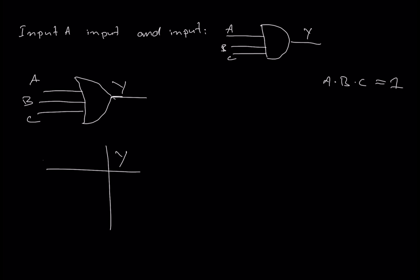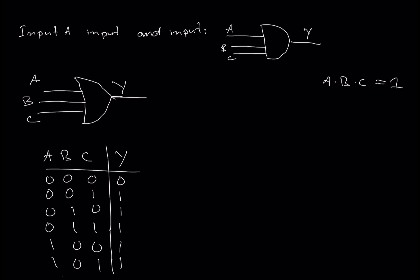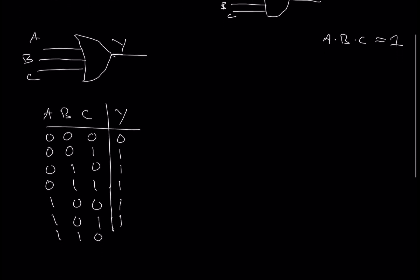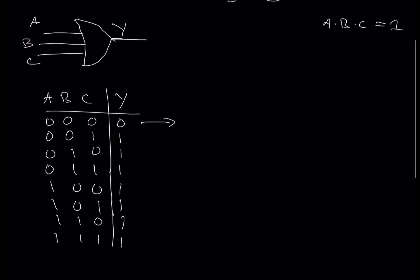The truth table has output Y with inputs A, B, and C. If all are off, the output is off. If any one input is on, the output is on. If two inputs are on, the output is on. If all are on, the output is on. So the OR gate is only off when all inputs are off — if any switch is on, the output is logic 1.